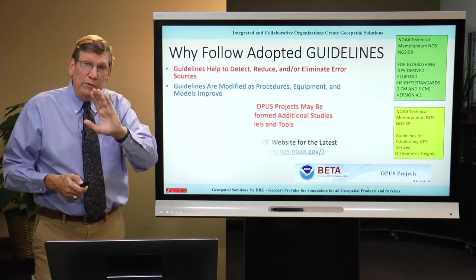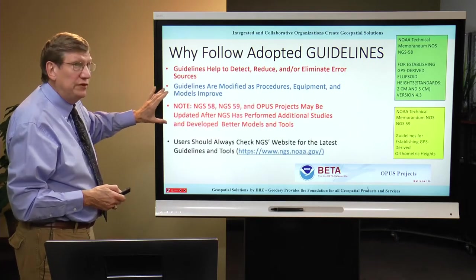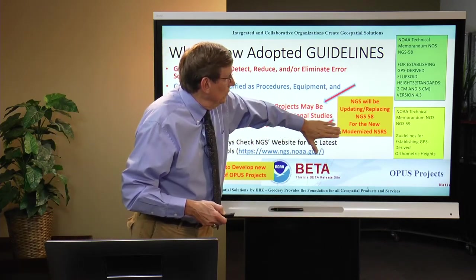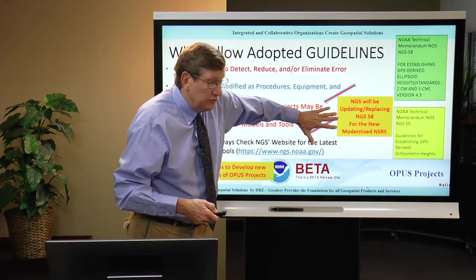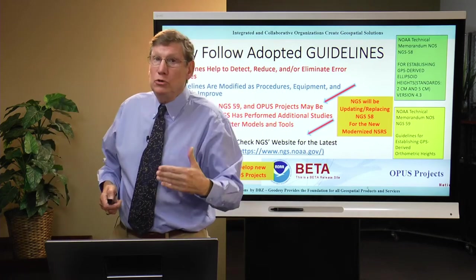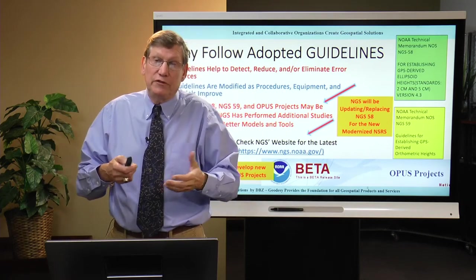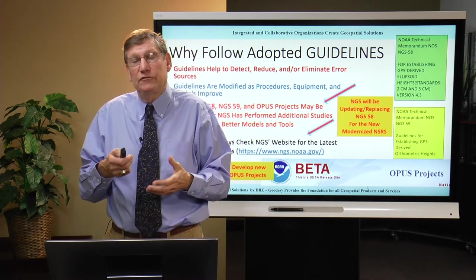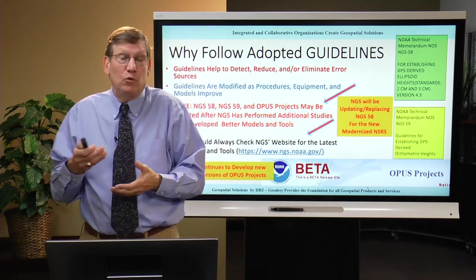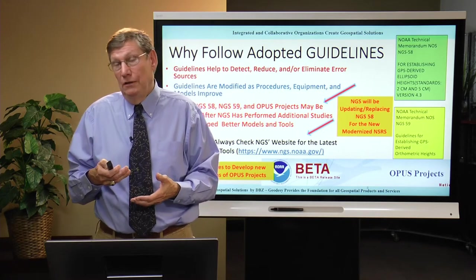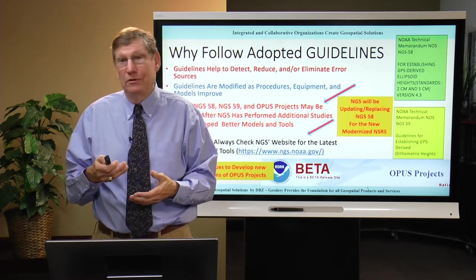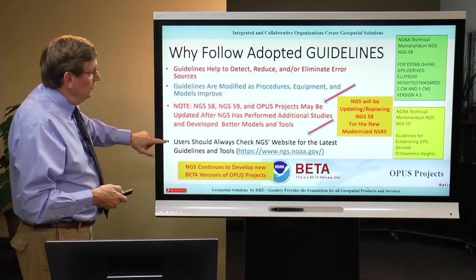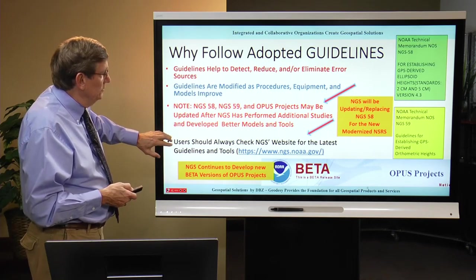NGS is modernizing the National Spatial Reference System, and their plans include modernizing NGS 58 and 59. NGS 59, which dealt with NAVD-88 heights, won't even be necessary once we're talking about NAPGD-2022 heights — the North American-Pacific Geopotential Datum of 2022. You can go to NOAA's NGS website to get all this information. NGS is always continuing to improve their beta software like Opus Projects, so get the latest software and check their homepage for highlights.